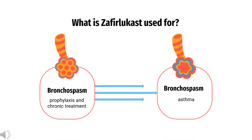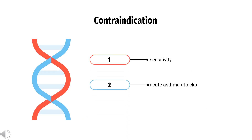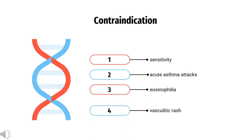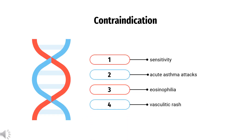What is Zafirlukast used to treat? It is indicated for the prophylaxis and chronic treatment of asthma. Who cannot use Zafirlukast? Zafirlukast is contraindicated in people that are hypersensitive or allergic to it.